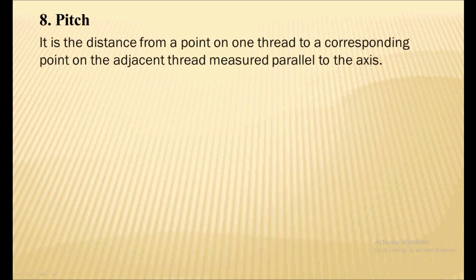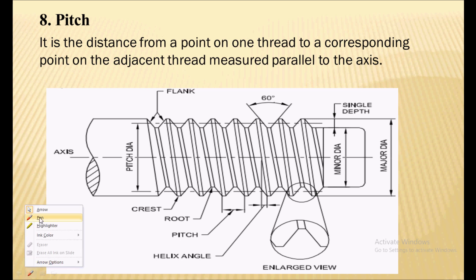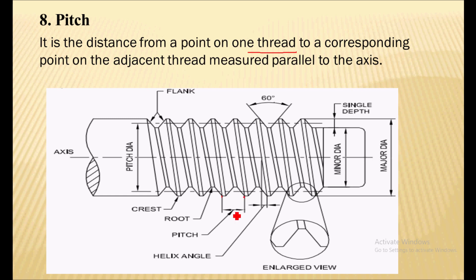Next is the pitch. Pitch is the distance from a point on one thread to a corresponding point on the adjacent thread. We take a corresponding point on the adjacent thread and measure the distance parallel to the axis. That is nothing but the pitch of the thread.